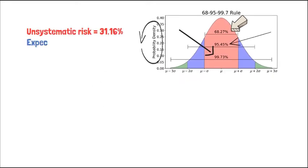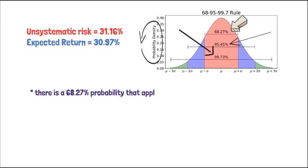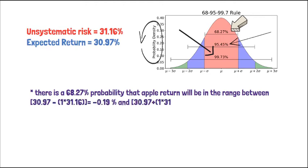Recall that the unsystematic risk of Apple Incorporation was calculated as 31.16% and the expected return was calculated as 30.97%. Now, based on the past five years monthly price data you just used and using normal distribution chart, there is a 68.27% probability that return on Apple stock will be one standard deviation above or below its expected return.